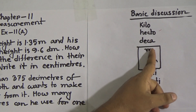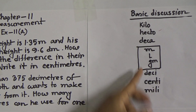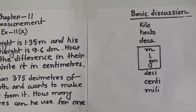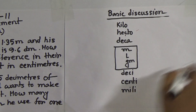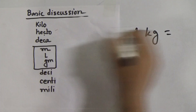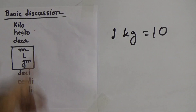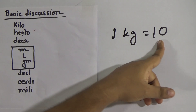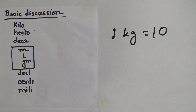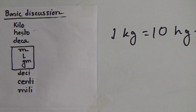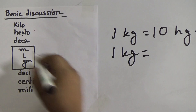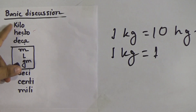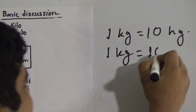If you can memorize this chart then this chapter becomes very easy. Notice: one kilo equal to how many hecto? Each step on the chart multiplies by 10. So one kilogram equal to 10 hectograms — that is one step. For two steps, we write one followed by two zeros. So one kilogram equal to 100 decagrams.